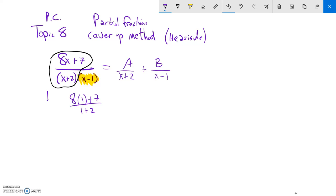And we ignore this part, because if we plugged a one into here, there'd be a zero. We'd be dividing by zero. And I get 8 times 1 is 8, 8 plus 7 is 15 over 3. That's a 5. So that's actually my B value. That's going to go over the X plus 1 part. So I know that I have a 5 over X plus 1. Positive 5.